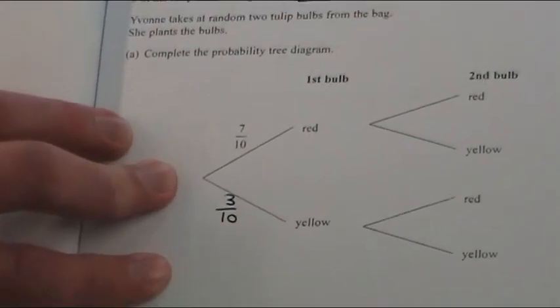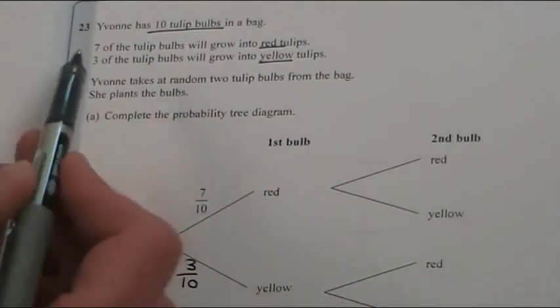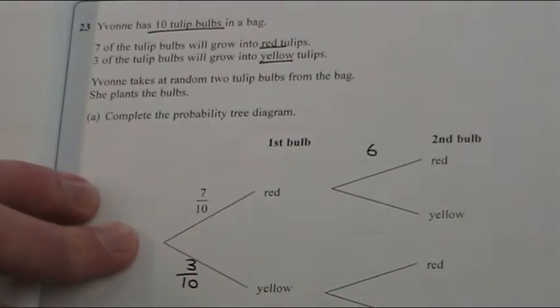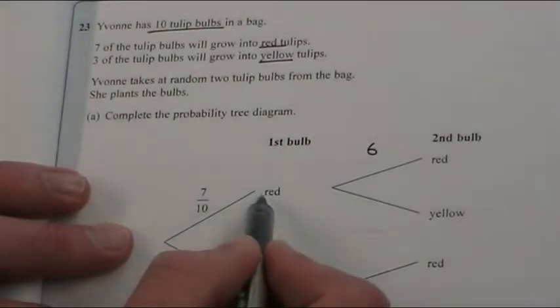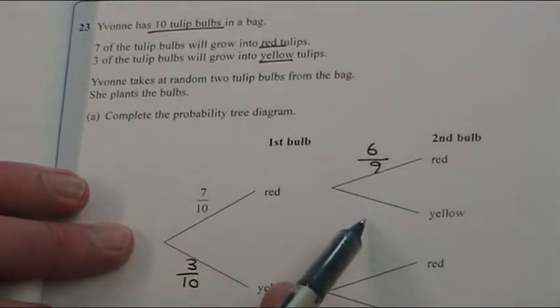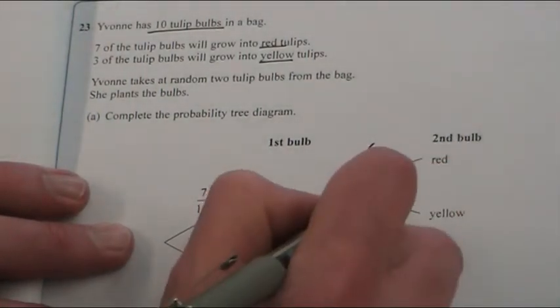Now this is where it gets a bit trickier. If it was a red, that means there is now 6 possible reds to be chosen, and where there was 10 before, if we've chosen a red now there's only 9. And this must add up to 1 because it's still either a red or a yellow, so that must be 3 over 9.